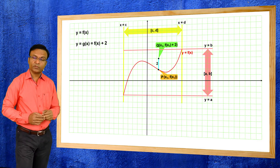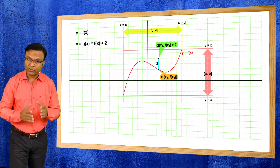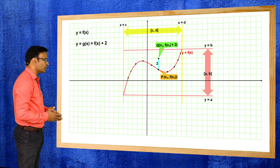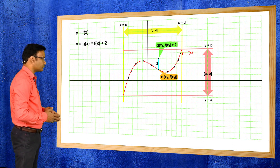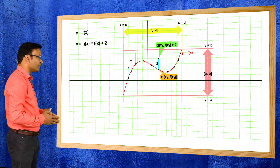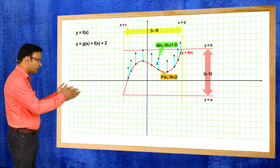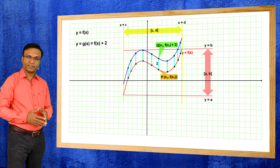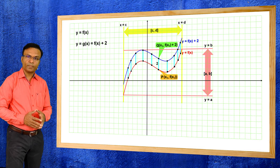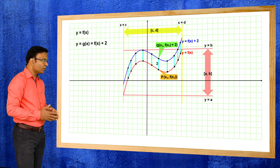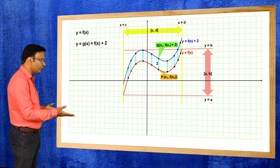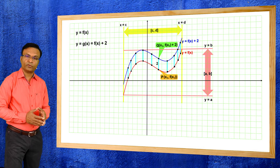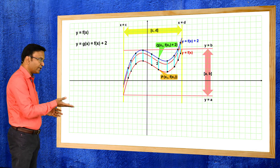This point lies on the graph of g(x) = f(x) + 2 because it satisfies this function. Let us take several points on the graph of f(x) and move two units vertically upward from each point. Joining these points, we get the graph of g(x) = f(x) + 2. So the mechanism is: to get the graph of g(x), shift the graph of f(x) two units vertically upward.